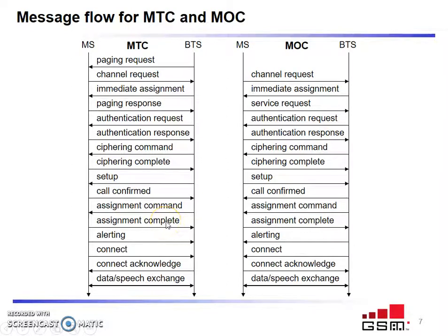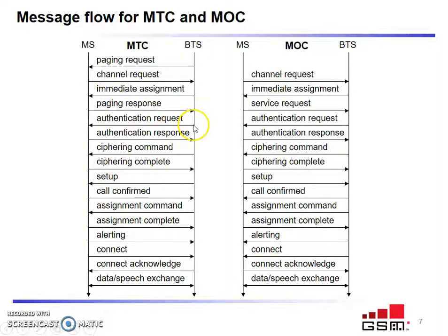Looking into the message flow for MTC and MOC — MTC first. The BTS makes a paging request. The MSC receives the paging request and gives back the required channel request. Once the request is received from MSC, the BTS immediately gives its assignment and the response is received from MSC. When the response is received, an authentication is requested from BTS, and BTS gets a response from MSC. Once the response is received, a ciphering command is initiated by BTS and completed by MSC.